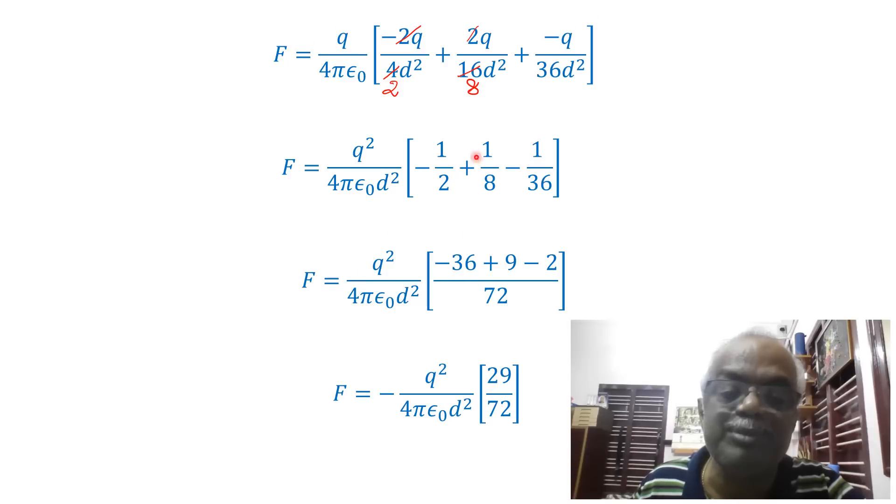Now if you take LCM this will be 72. So this is minus 36 and this is plus 9, this is minus 2. So you will get minus 29 numerator. I have taken minus outside, so it indicates overall is repulsive force. So the numerator will become 29 and the denominator is 72.